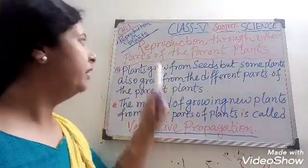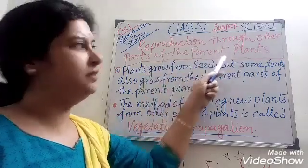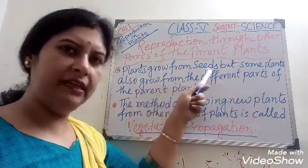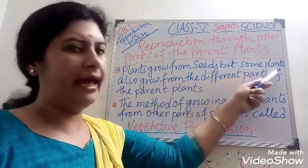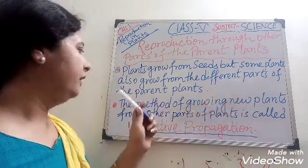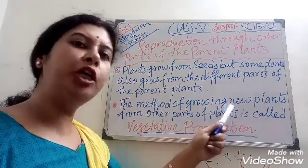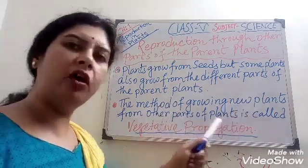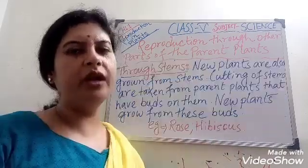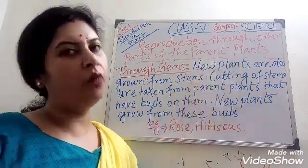Move on to the next topic: reproduction through other parts of the parent plants. As you already know children, plants grow from seeds, but some plants also grow from different parts of the parent plants. The method of growing new plants from other parts of a plant is called vegetative propagation. Now we are going to discuss reproduction through other parts one by one.